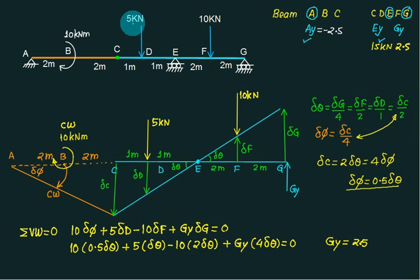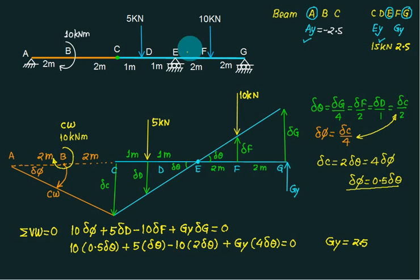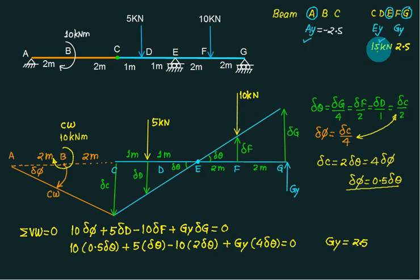Let us verify: how much is downward? 5 plus 10 equals 15. And how much is upward? Ay is minus 2.5 (downward), Ey is 15 upward, Gy is 2.5 upward — so 15 plus 2.5 minus 2.5 equals 15. The solution is correct. Thank you.